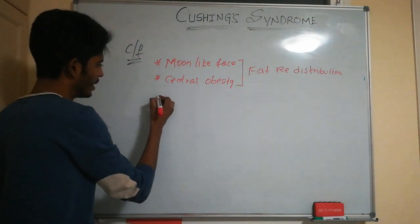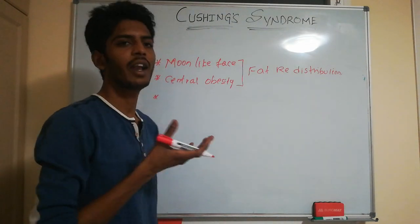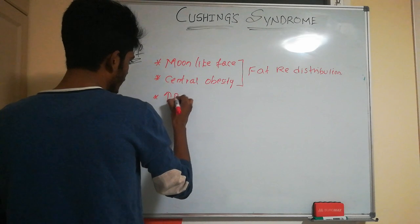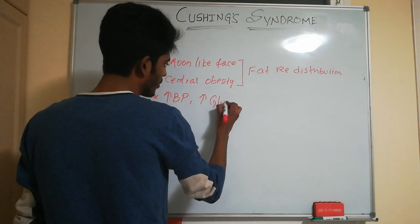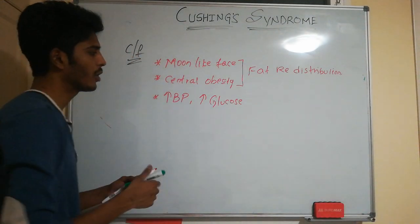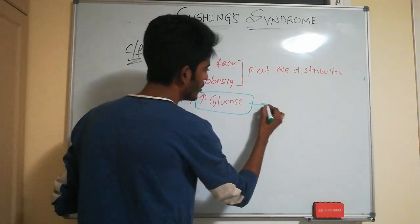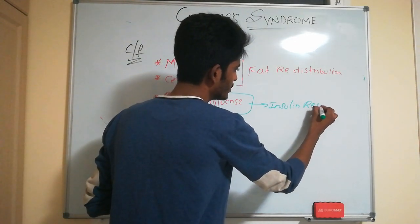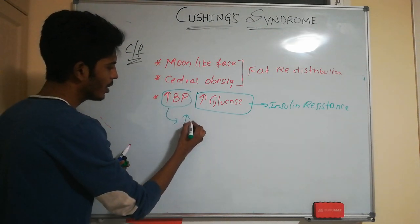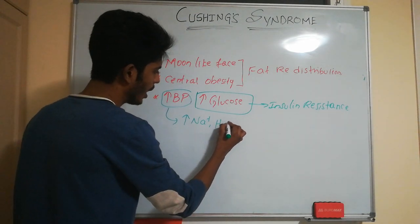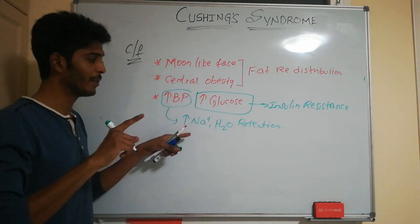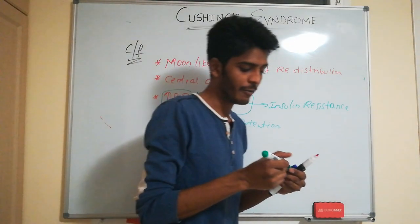Patients will also have elevated blood glucose and elevated blood pressure. The elevated blood glucose is due to insulin resistance caused by excess cortisol. The elevated blood pressure is due to sodium and water retention — glucocorticoids have some mineralocorticoid-like action, so in Cushing syndrome more glucocorticoid leads to higher blood pressure.